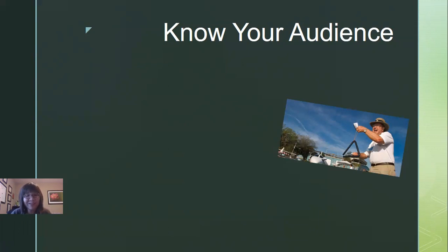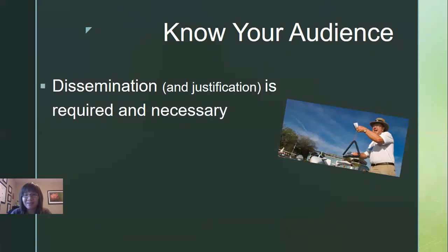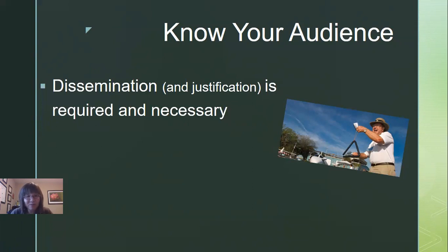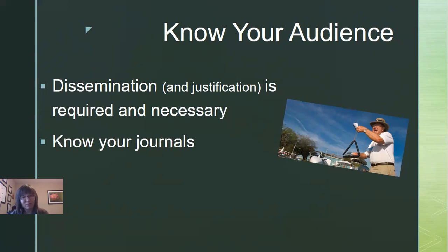The fundamental purpose of disseminating work is to know your audience. As an educational researcher, dissemination is required and necessary because this is how the scientific community continues to grow and move forward. Knowing how to disseminate your work and justify the significance, purpose, and importance of your work is definitely a key skill we all need to have. That leads to the next point: you have to know your journals.